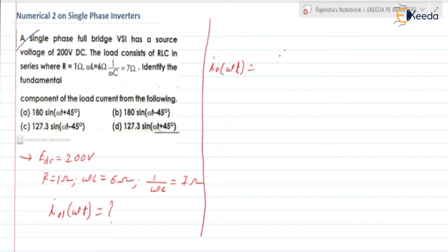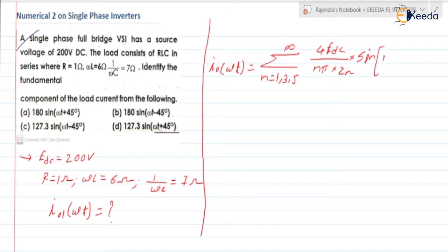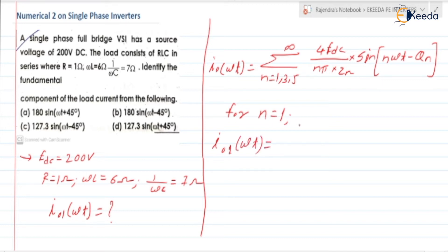The general expression is: I₀(ωt) = summation over N = 1, 3, 5, 7 up to infinity of [4·EDC / (N·π·Zₙ)] · sin(N·ωt − θₙ). For the fundamental component, N is equal to 1, so we can write I₀₁(ωt) = [4·EDC / (π·Z₁)] · sin(ωt − θ₁). Consider this as equation 1.